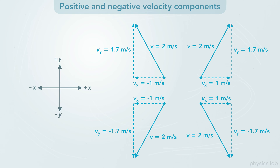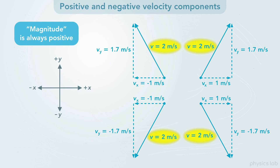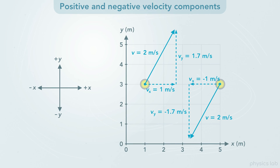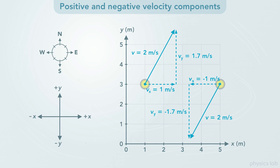You might have noticed that the components are switching between positive and negative, but the 2 meters per second didn't change. A vector's magnitude is always positive. 2 meters per second is the speed of the stone, which is the magnitude of the velocity. No matter which way the stone is moving, we would still say its speed, or the magnitude, is positive 2 meters per second. Keep in mind that the components are positive or negative based on the direction that they're pointing, not on the position of the object. The positive and negative directions are always the same no matter where the object is. It's like using compass directions — if a component is pointing to the right, it's pointing in the east direction, which is positive. If the component is pointing to the left, it's pointing in the west direction, which is negative.